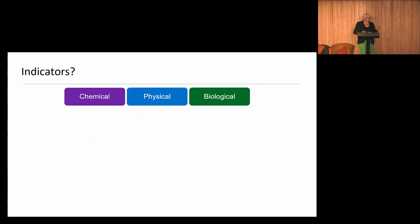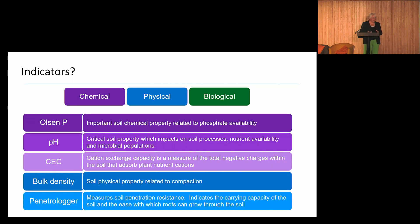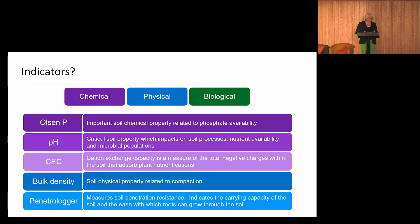I want to move on to some of the indicators we've been using in Northern Ireland in AFBI projects. We've been looking at chemical, physical and biological parameters. In terms of chemical and physical parameters, we've been looking at Olsen P, which gives an indication of the availability of phosphate for plant growth.